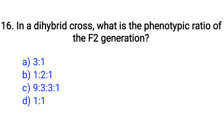Question number 16. In a dihybrid cross, what is the phenotypic ratio of the F2 generation? Option A: 3:1, B: 1:2:1, C: 9:3:3:1, D: 1:1. The right answer is Option C: 9:3:3:1.